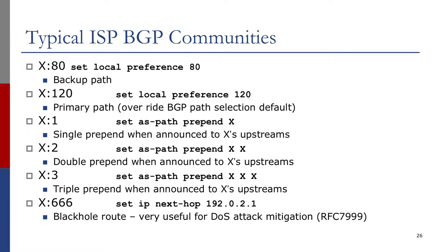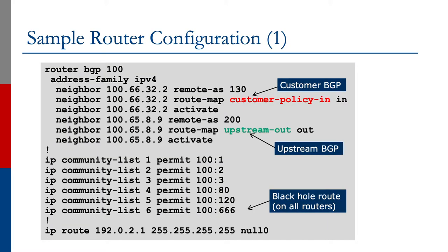The blackhole community can be propagated along different upstreams quickly, so if you're facing a DDoS you attach that community to the network facing the attack and everybody upstream knows to blackhole it. Let's look at a couple of examples. The first example shows a router inside AS100 with a customer in AS130 and an upstream in AS200. For the customer in AS130 we use the customer policy on the inbound direction, and when propagating to AS200 we use the upstream-out route map in the outbound direction.